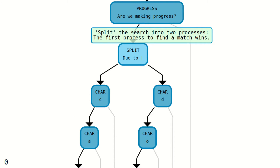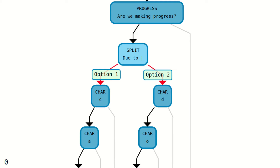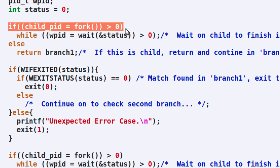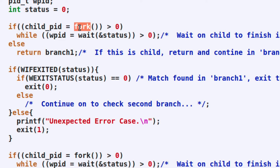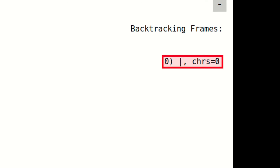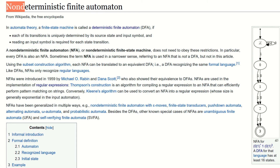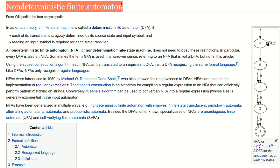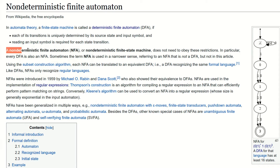The third node type performs a split operation. This is a situation where the regular expression matcher has more than one possible path to continue through the control flow graph. In programming terms, this node effectively does the same thing as forking a process or splitting off work into two separate threads. This can also be implemented in a single thread by trying both paths one at a time and pushing saved information onto a stack. In computer science theory, this node type should remind you of the difference between DFAs and NFAs.